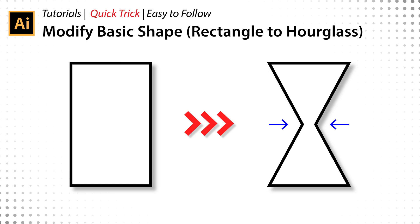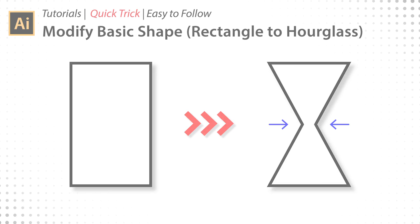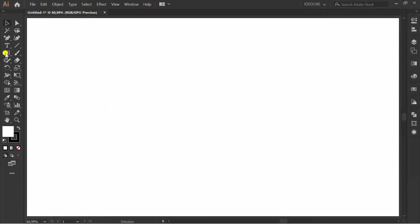How to modify a rectangle to an hourglass shape. Follow the steps. First, make a rectangle.